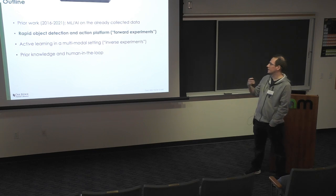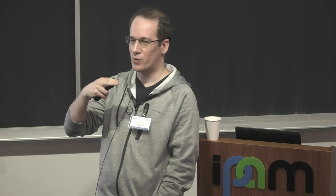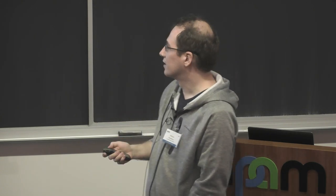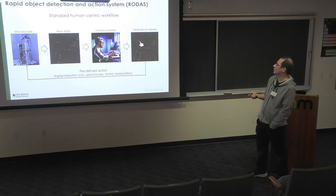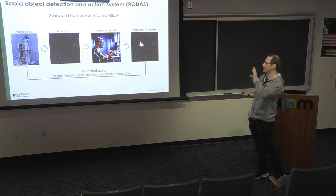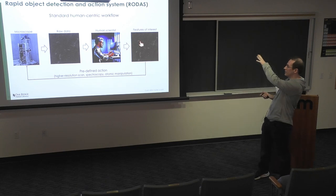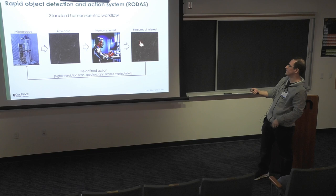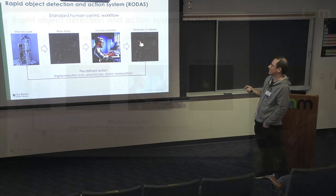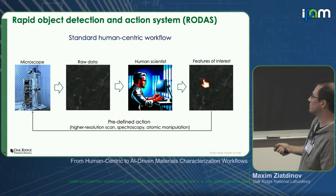Then we thought: if we can do all of that after the experiment is over, how about we do it while the experiment is still running and use the outputs of our model to steer experiments? I asked ChatGPT for a memorable abbreviation for what we do, and it gave me RODAS — Rapid Object Detection and Action System. Going back to a standard human-centric workflow: you have a microscope, it collects a 2D image as a single frame.